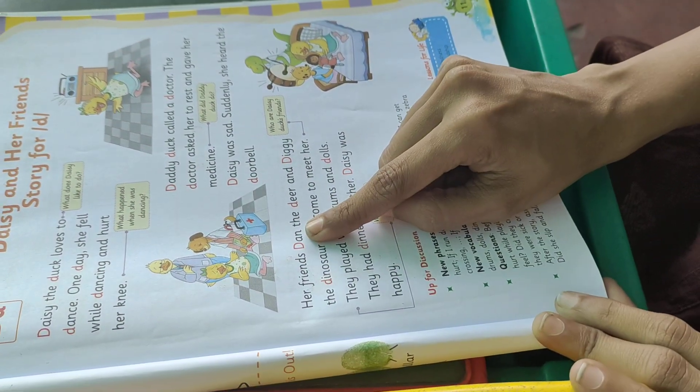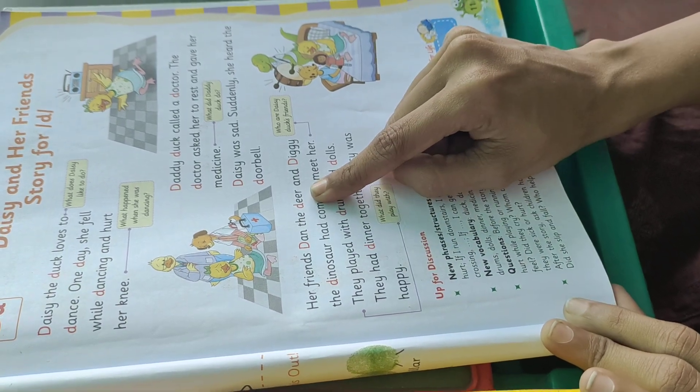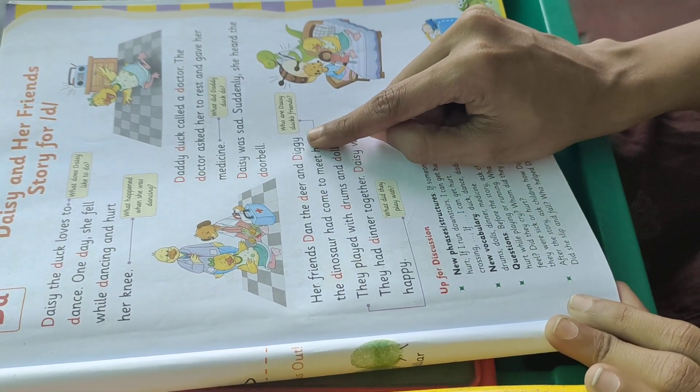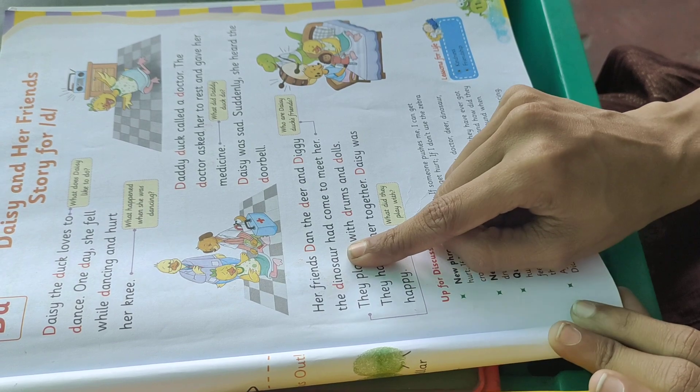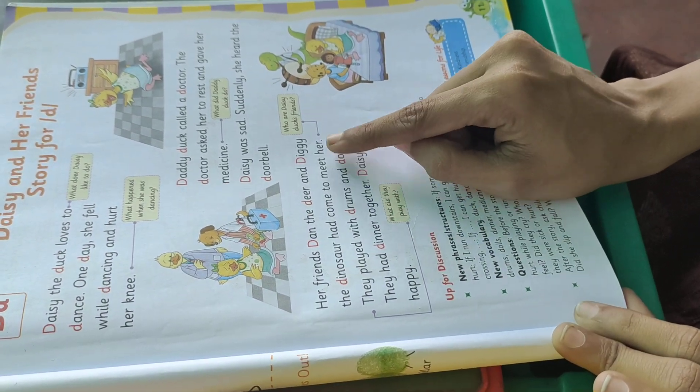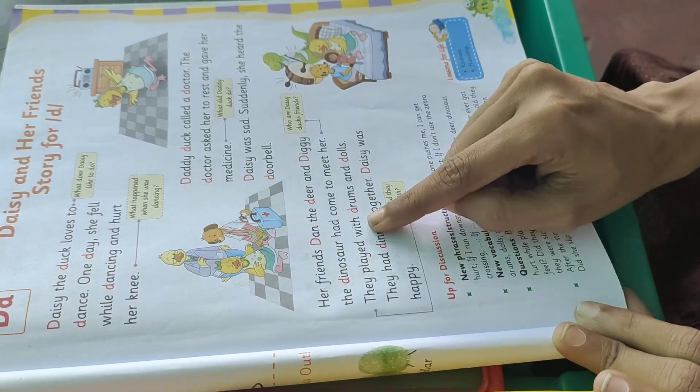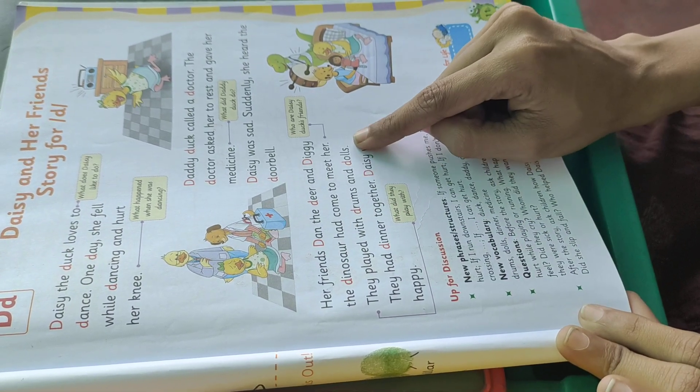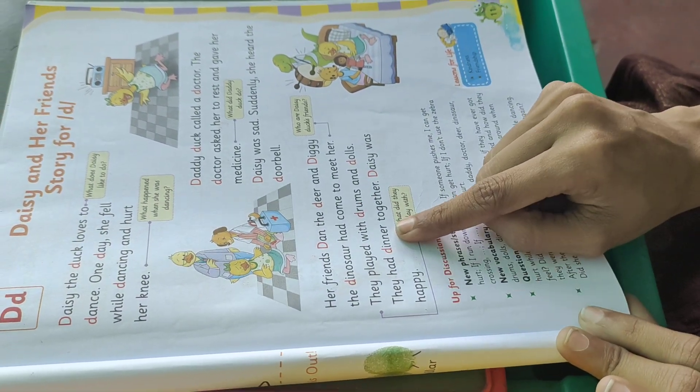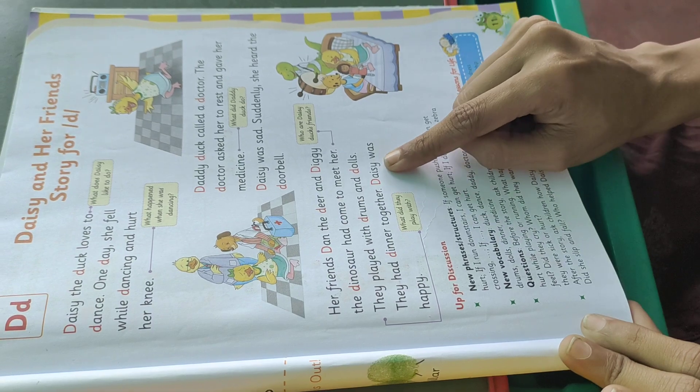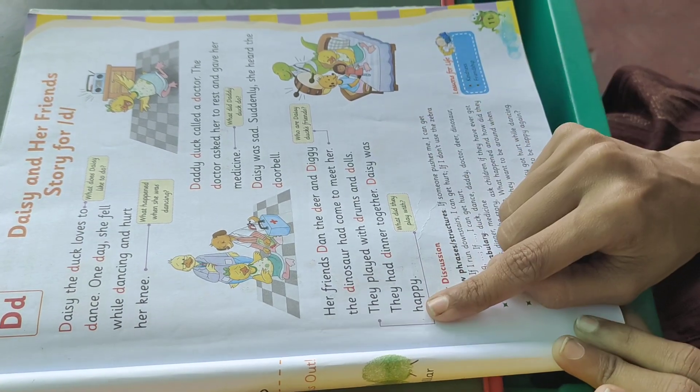Her friends, da da dan, da da da deer and da da diggy, the da da dinosaur had come to meet her. They played with da da drums and da da dolls. They had da da dinner together. Da da da da daisy was happy.